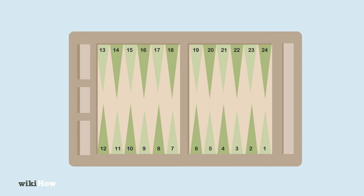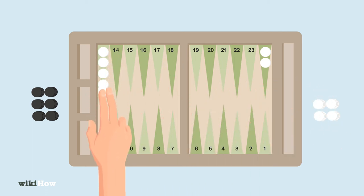Backgammon starts with each player placing two of their checkers on their 24 points, five checkers on their 13th point, three checkers on their 8th point, and five checkers on their 6th point.